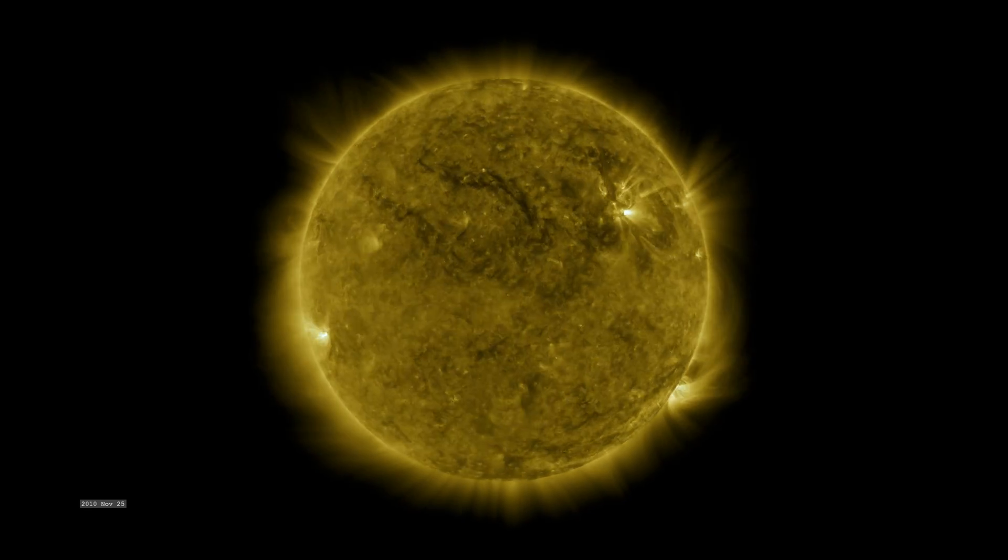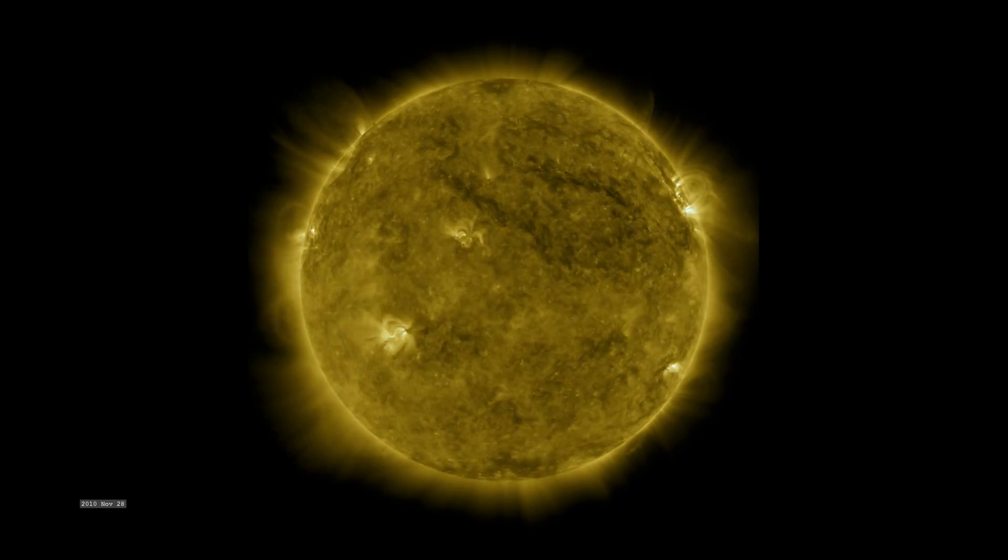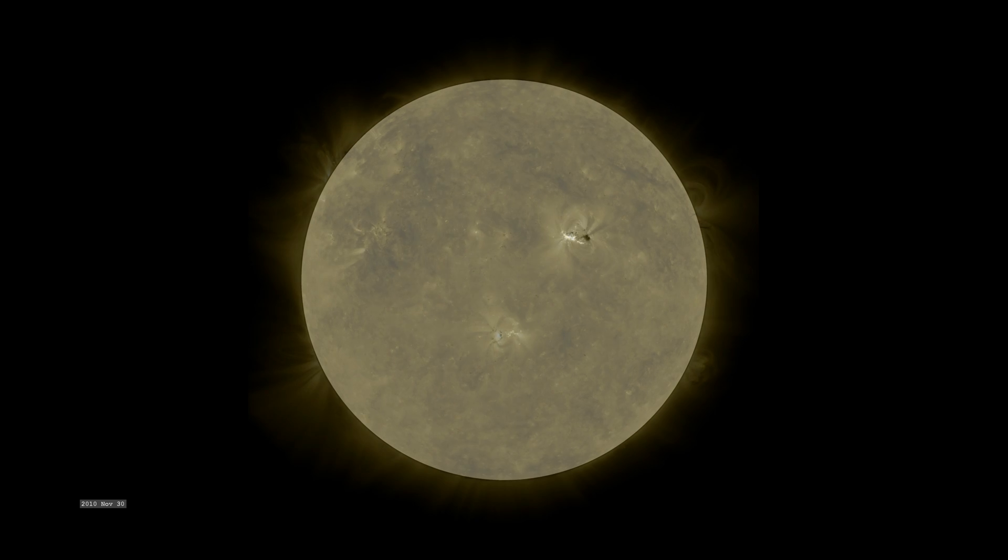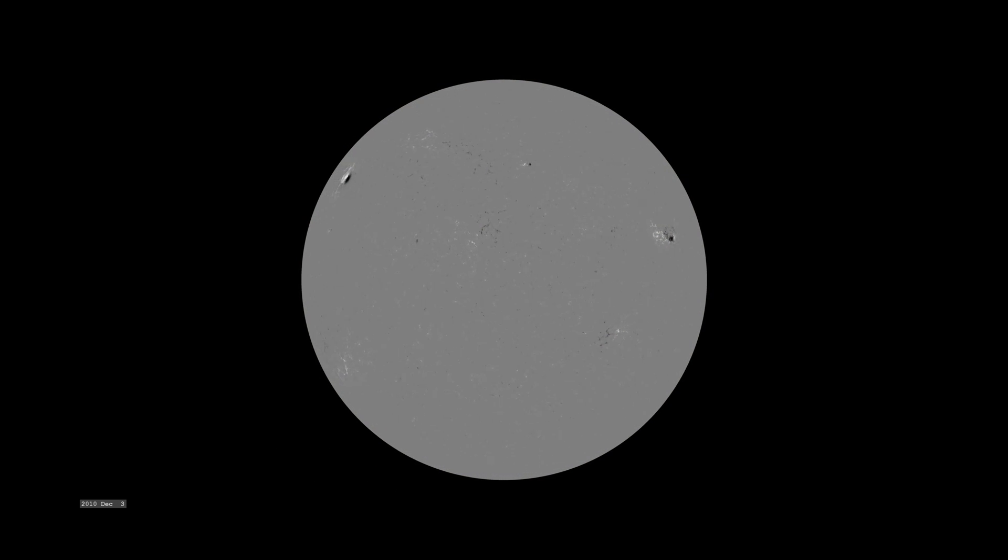In ultraviolet light, the Sun appears very active. Using images from SDO in different wavelengths and polarizations, maps of the magnetic field at the Sun's surface can be created. In these magnetograms, white and black indicate strong magnetic fields pointing out of and into the Sun, while gray indicates weak magnetic fields.